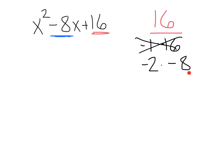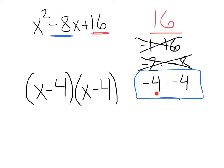Negative 2 times negative 8 is 16, but negative 2 plus negative 8 is negative 10. No good. Next, we've got negative 4 times negative 4, that's 16, and negative 4 plus negative 4 is negative 8, exactly what we want. Since we found our factors, we can just put those in x minus 4 times x minus 4.